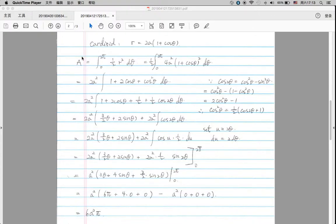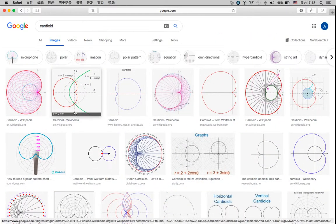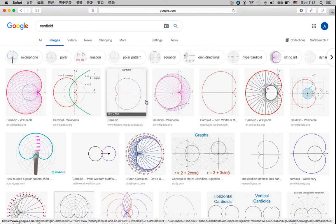Hi, today I want to talk about how to calculate the area of a cardioid. So basically a cardioid is a shape like this.